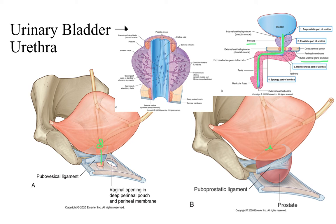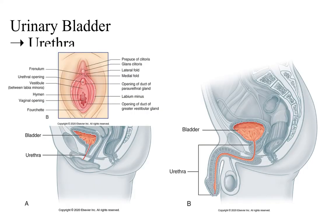The parts of the male urethra include the pre-prostatic part, the prostatic part, the membranous part, and the spongy part. In the female, the urethra opens to the vestibule, between the labia majora and labia minora, just anterior to the vaginal canal. In the male, the urethra has to go through the prostate, then through the perineal membrane, then through the spongy tissue of the penis all the way to the tip — definitely a much longer path than in females.